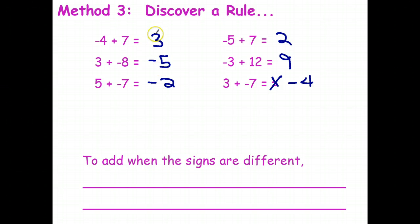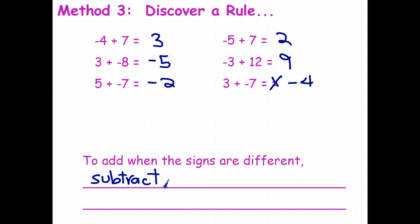But then how do I decide if the final answer is positive or negative? Well, it depends which is the bigger number. Here I've got more money than debt, so it's positive; here I have more debt than money, so it's negative. So the way I like to express this: to add when the signs are different, subtract — ignoring the positive or negative, just look at the numbers — and keep the sign of the larger.